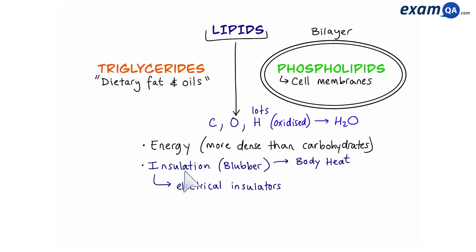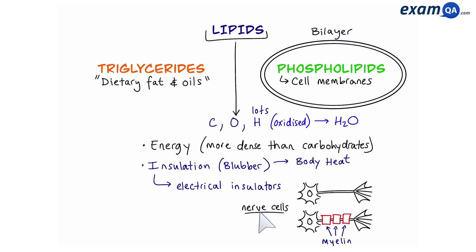Secondly, lipids provide insulation. One way is that they reduce body heat loss, and the other way is by acting as electrical insulators. For example, nerve cells that have a type of lipid around their axon called myelin are much faster at conducting electrical impulses.